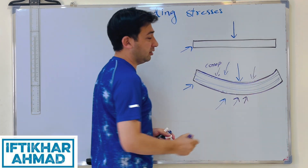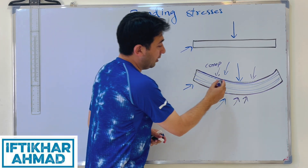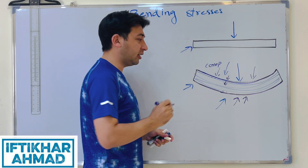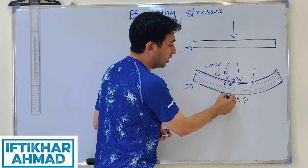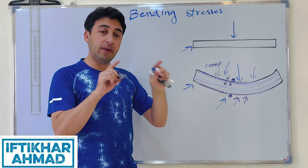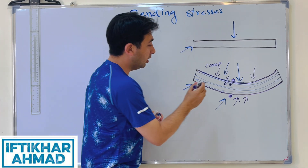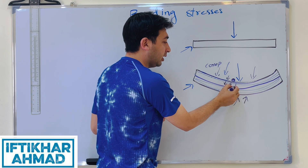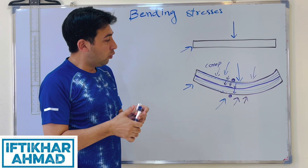There will be more compressive stresses at the top and more tensile stresses at the bottom — both are bending stresses. Going from the top extreme fiber to the bottom extreme fiber, we move from compression toward tension. Somewhere in the middle there is a fiber where we are transitioning from compression to tension.